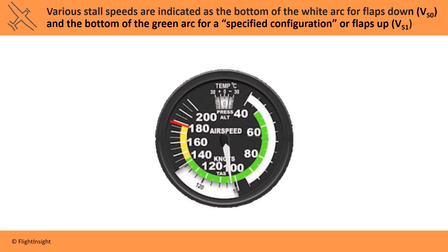Every aircraft has a series of reference speeds, many of which are color-coded on the airspeed indicator as shown here. The lowest of these V-speeds will be the stall speeds. In a specific set of circumstances, an aircraft will stall at specific speeds. For example, when the flaps are down and the gear is down — in other words, the aircraft is in a landing configuration — the aircraft will stall at VSO. I often think of the SO as being short for 'stuff out,' like flaps, gear, or other stuff you put out when landing. This is depicted by the very bottom of the white arc on the airspeed indicator.